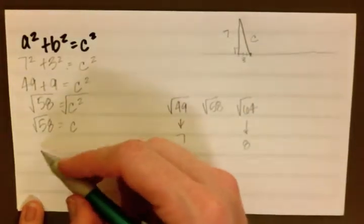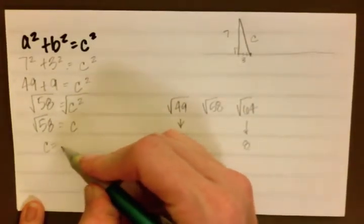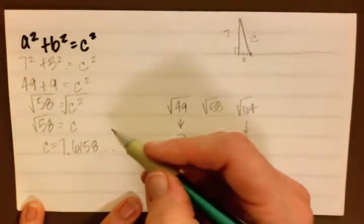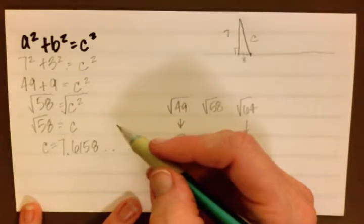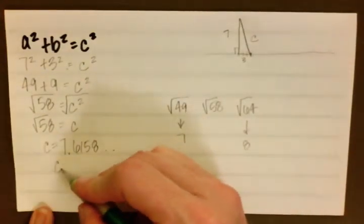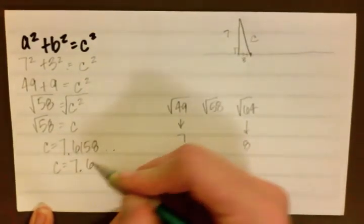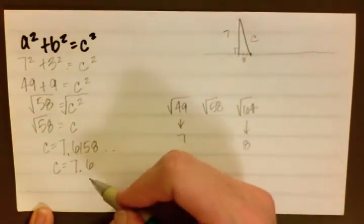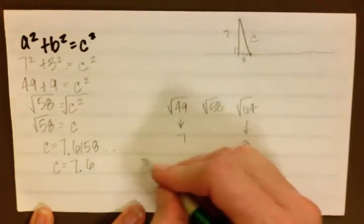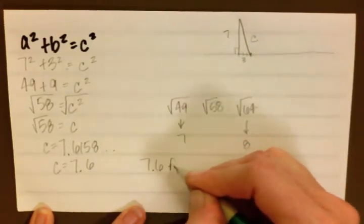When we take it to a calculator we get c equals 7.6158, and that goes on for a while there with some more numbers. But the question asked us to round to the nearest tenth of a foot, so we have c equals 7.6. One does not make it round up, so it stays 7.6, and that is our answer. The length of the rope is 7.6 feet.